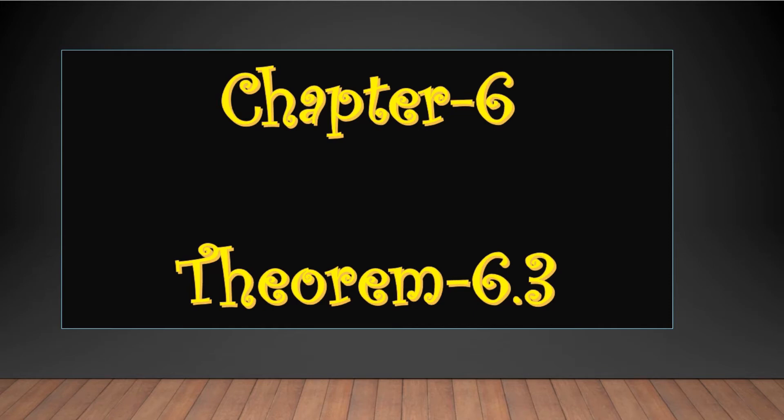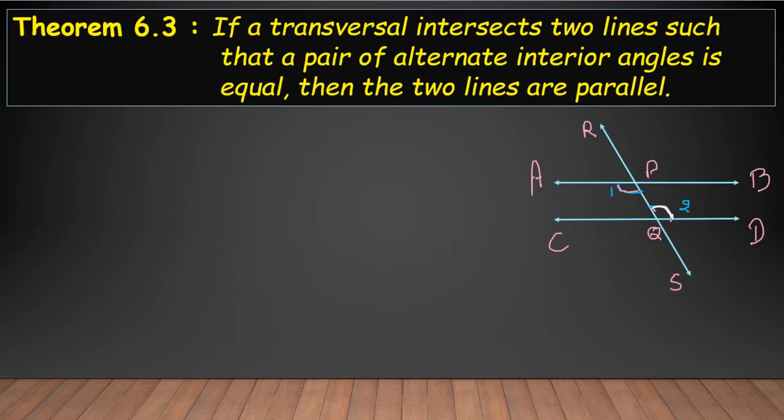Hello students, welcome back to Math Palace. Today we will do Theorem 6.3. Let's start. The theorem is: if a transversal intersects two lines such that a pair of alternate interior angles is equal, then the two lines are parallel. If transversal RS intersects two lines AB and CD such that alternate interior angles angle 1 and angle 2 are equal, then lines AB and CD are parallel.